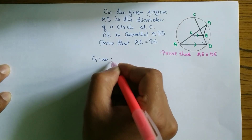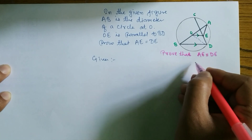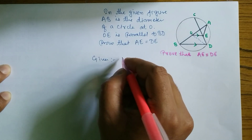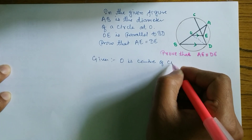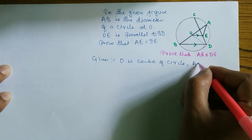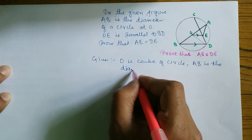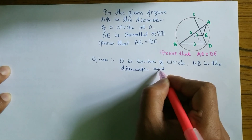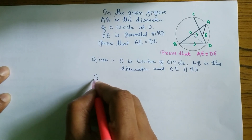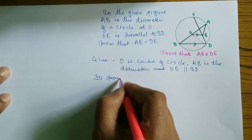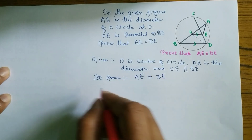Given: O is the center of the circle, AB is the diameter, and OE is parallel to BD. To prove: AE is equal to DE.